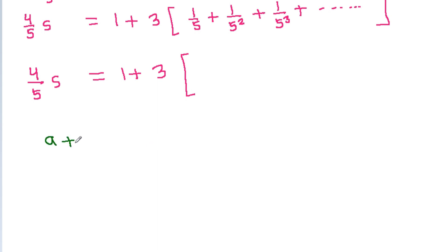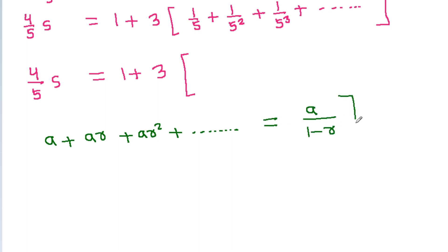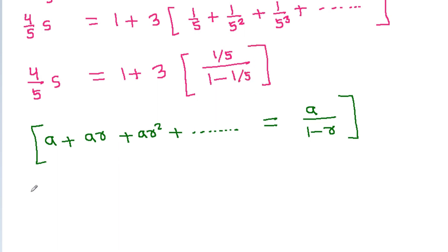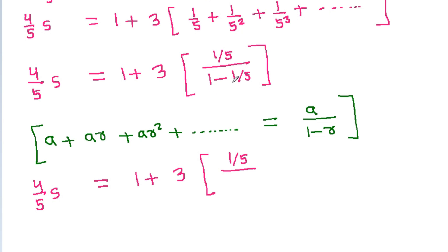Using the geometric series formula a + ar + ar² + ... = a/(1 - r), here a = 1/5 and r = 1/5. So (4/5)S = 1 + 3 times (1/5) / (1 - 1/5), which gives 1 + 3 times (1/5) / (4/5).